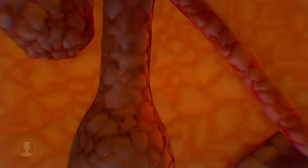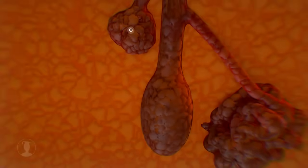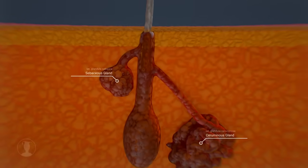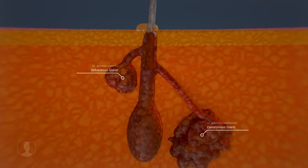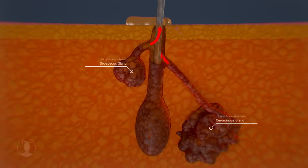The ceruminous glands produce earwax, which is mixed with the sebum from the sebaceous glands. More information on this can also be found in the animation on the immune system.